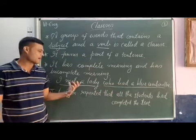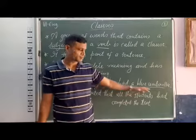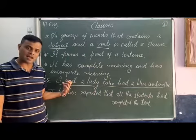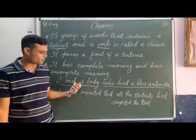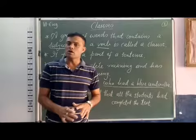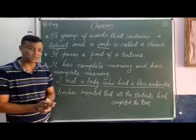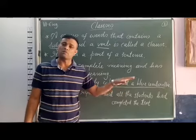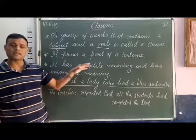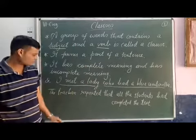Both are groups of words. 'I met a lady' has four words — 'I' is the subject, 'met' is the verb. 'Who had a blue umbrella' has five words — 'who' is a conjunction, 'had' is the verb. So both are clauses. One has complete meaning and the other has incomplete meaning.